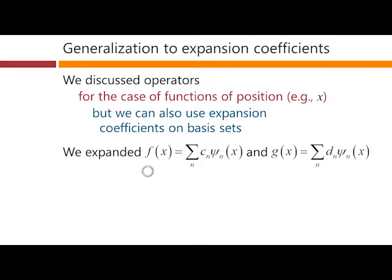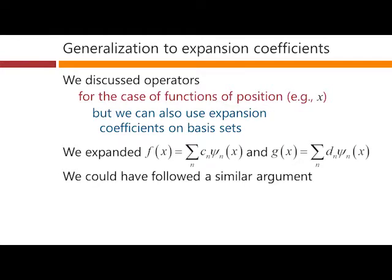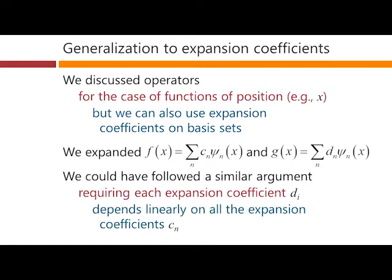So we had expanded the function f of x, for example, on some basis here, the expansion coefficient cn. And we could also expand the function g of x similarly with expansion coefficients dn. And as I said, we could have followed a similar argument requiring each expansion coefficient di to depend linearly on all of the expansion coefficients cn.